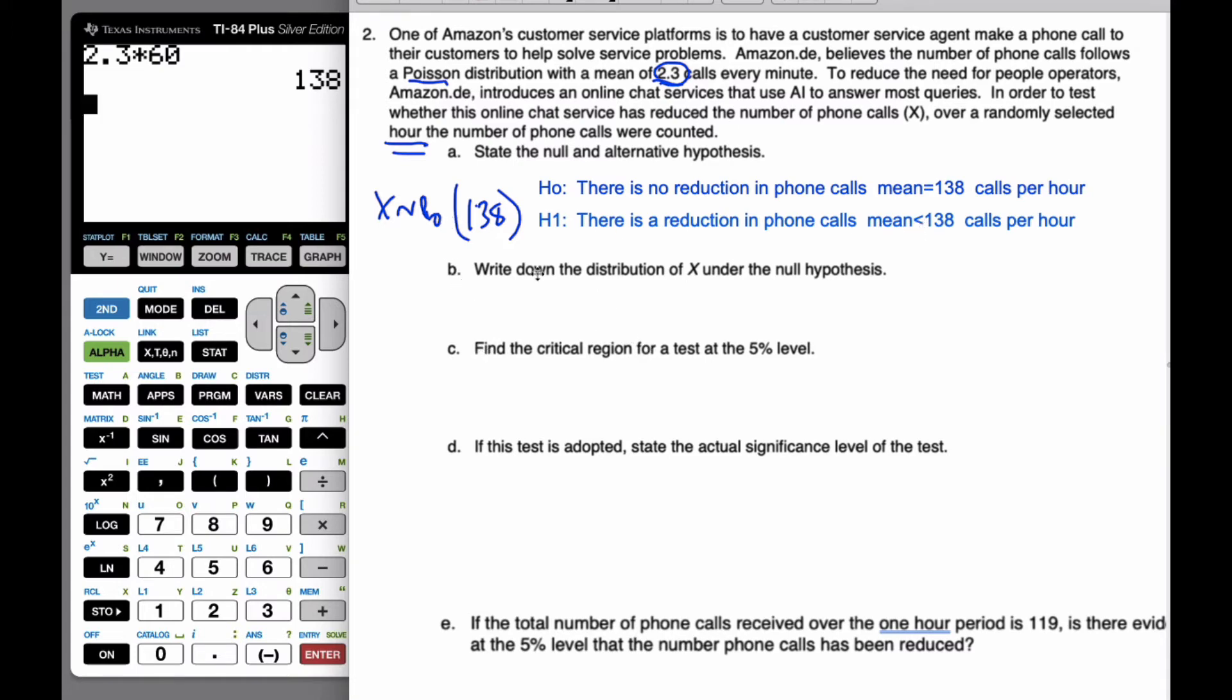We want to find the critical region for the 5% level. Again, this is a discrete distribution, so you have to consider what's going on here. So I have my distribution. I could have zero phone calls, that's possible. I could also have 138 phone calls in every single combination in between. And so I'm looking to find the critical region at this level, the 5%. I'm looking to find some kind of a boundary where everything on this side is 5% because it's a less than scenario.